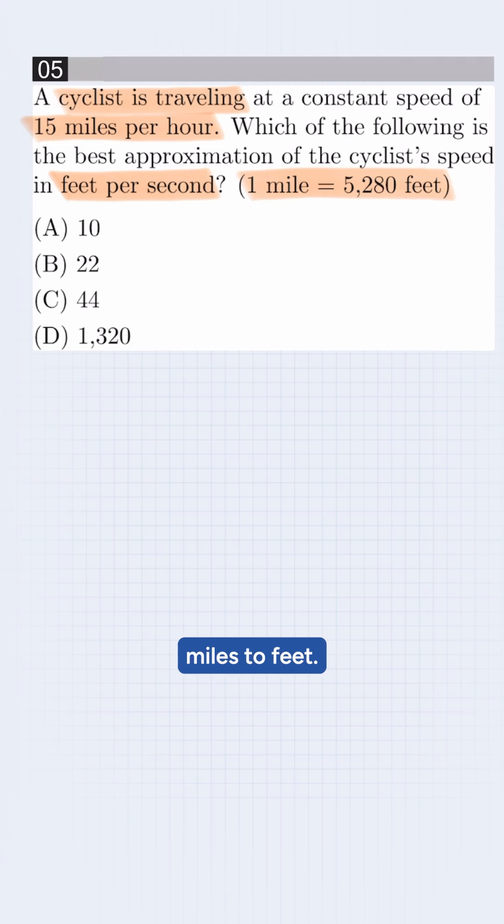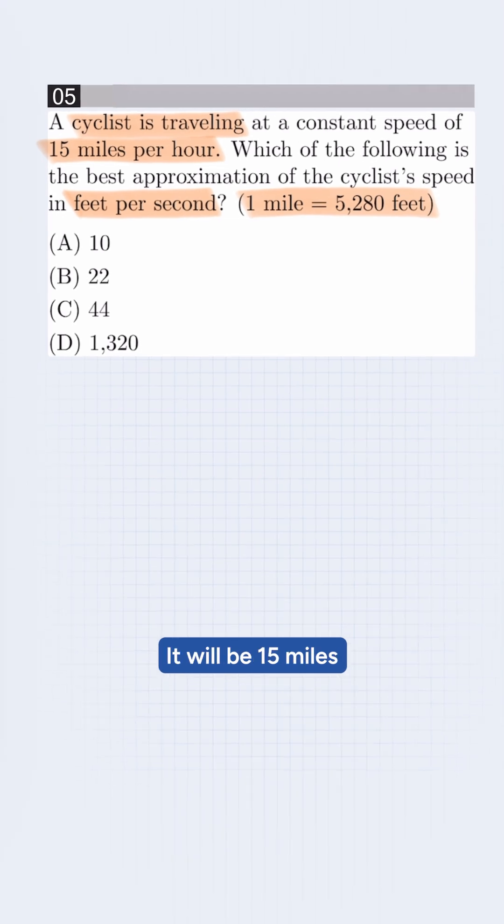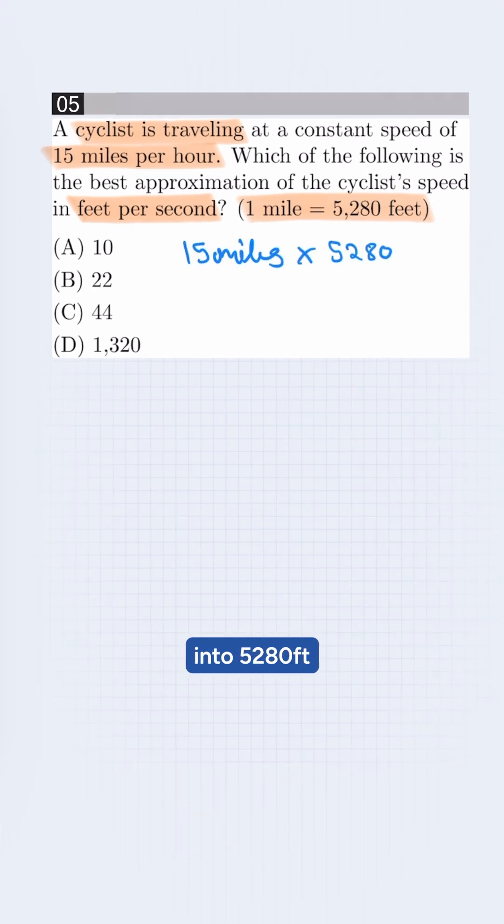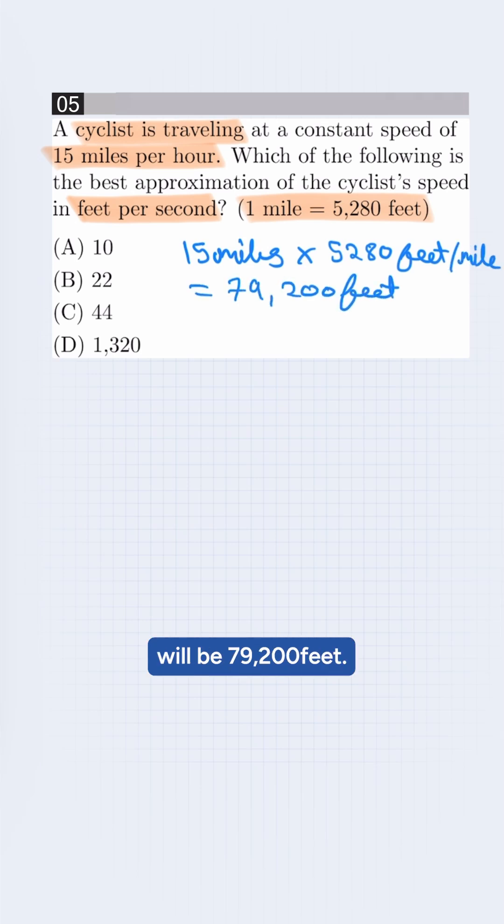So we first convert miles to feet. It will be 15 miles times 5,280 feet per mile, which will be 79,200 feet. So the speed is 79,200 feet per hour.